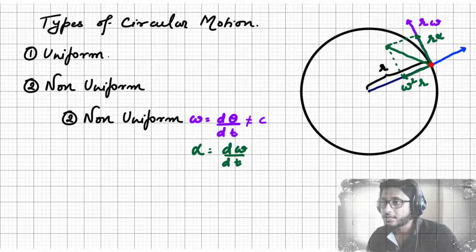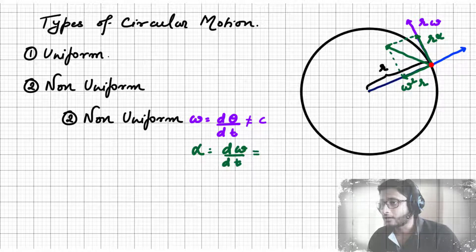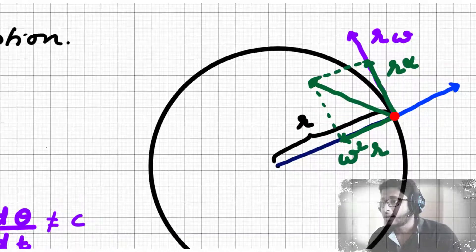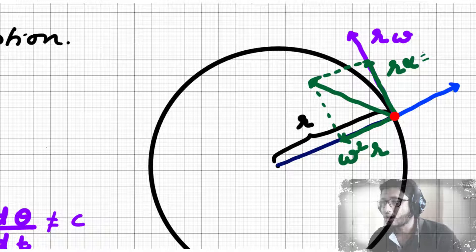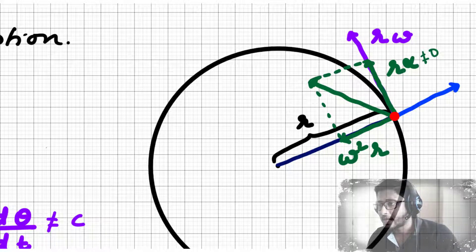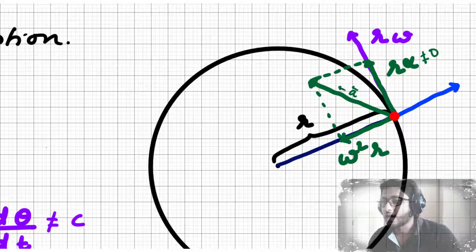In the case of non-uniform circular motion, the angular velocity of the particle changes with time, which means there must exist some angular acceleration. If α is the angular acceleration, then the acceleration will not only be in the direction opposite to the radial unit vector but also along the tangent. That is why the resultant acceleration, or the overall acceleration, will have both components.